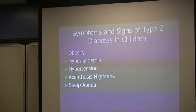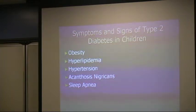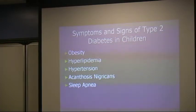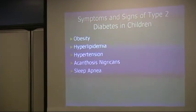Number two — listed here as number four but I would rank it second — is acanthosis nigricans. An abnormal fasting lipid profile, particularly elevated triglycerides and low HDL, are risk factors for metabolic syndrome, which we will discuss later. Additional signs include elevated blood pressure and sleep apnea.